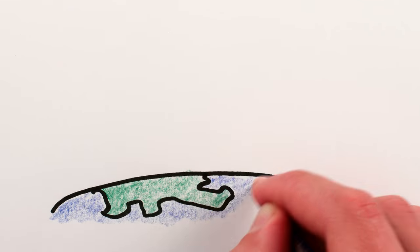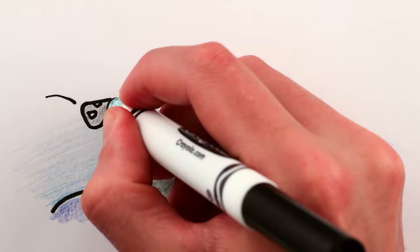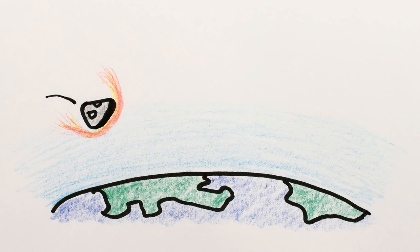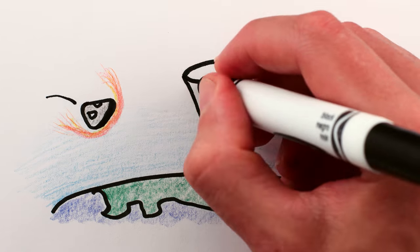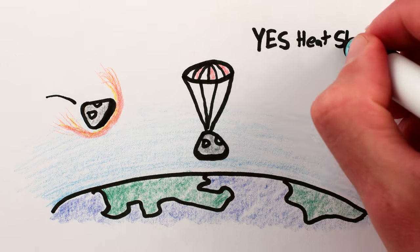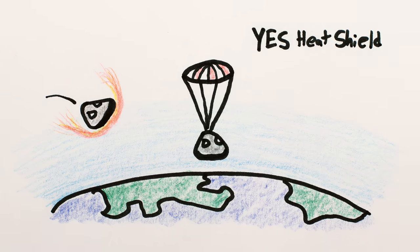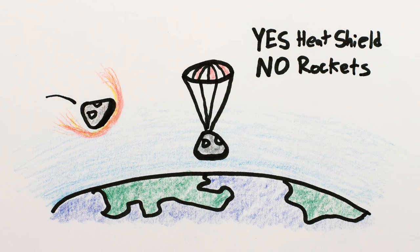On Earth, or Venus or Titan, there's enough air that you can land largely unpowered, first by slowing down with a heat shield and atmospheric drag, and then with parachutes. So you use a lot of weight for heat shields and walls and parachutes, but don't need big rockets or lots of fuel to land.